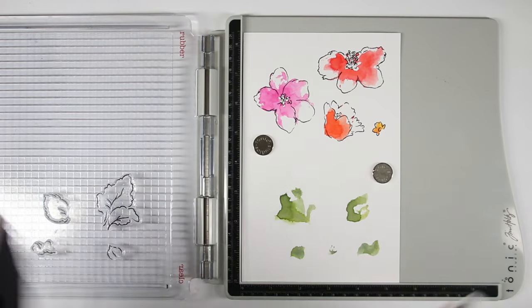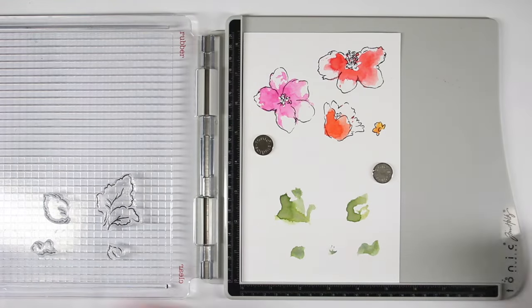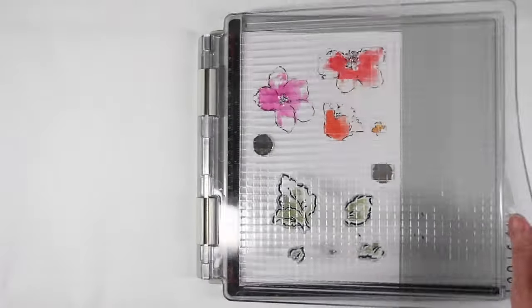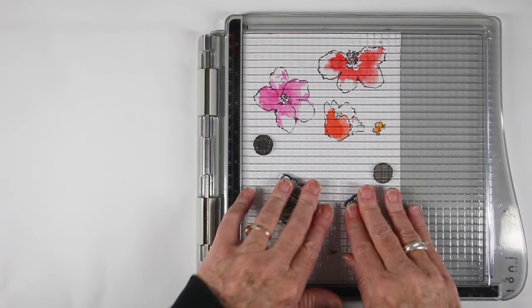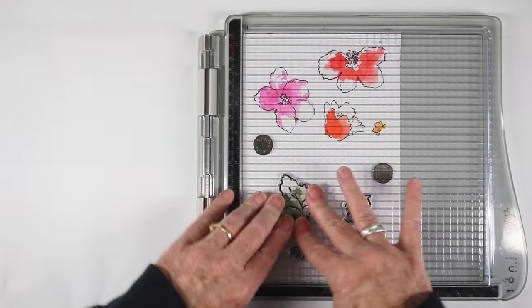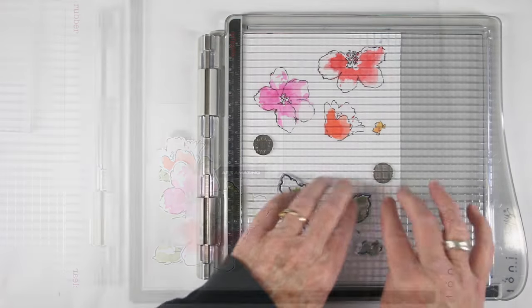And to finish up my flowers and leaves I am stamping the outsides of my leaves with the black ink as well. And doing the same thing where I'm going to go ahead and press down really hard to make sure I get a really great impression.